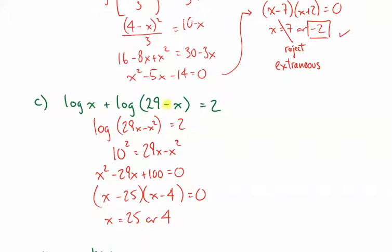25 substituted here is good. 25 substituted here makes the result of 4, which is also good. Let's try 4. That one's valid. Let's try 4. 4 substituted here for an argument is good. 4 substituted here makes log of 25. Again, that's good. You should actually show the substitution. Okay? I'm just going to make a note of that. Show the substitution as your check.